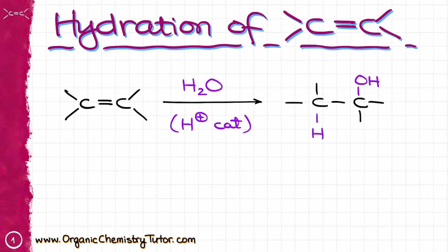Hello everyone, Victor is here, and in this video I want to talk about the hydration of alkenes. This reaction is very similar to a hydrohalogenation reaction. It also follows the Markovnikov rule, forms a carbocation intermediate, and is also prone to rearrangement because of that. But there are also a couple of important differences that you need to know to make sure you don't get tricked on the test.